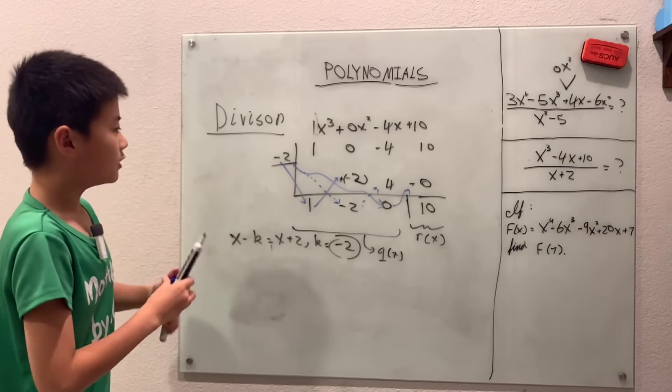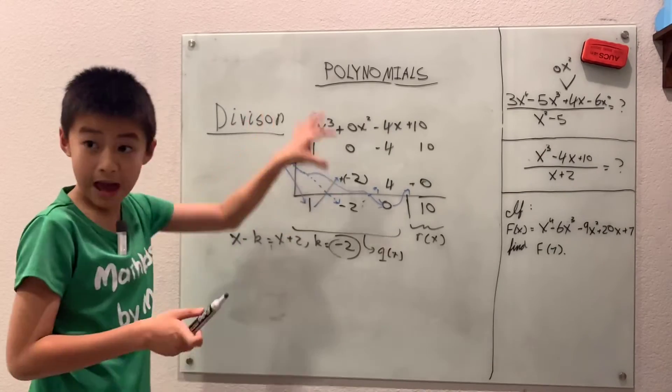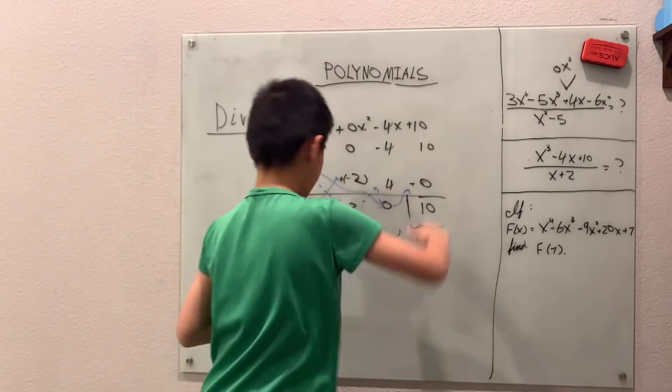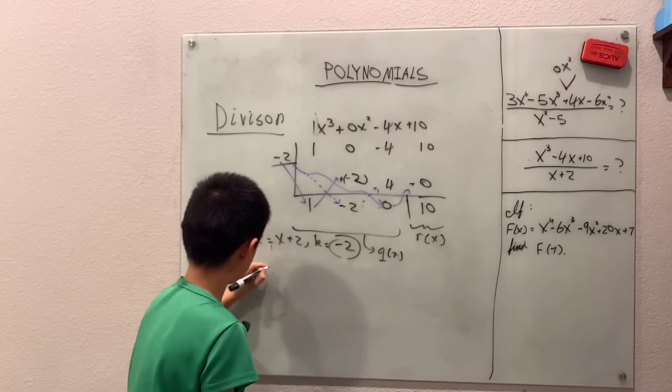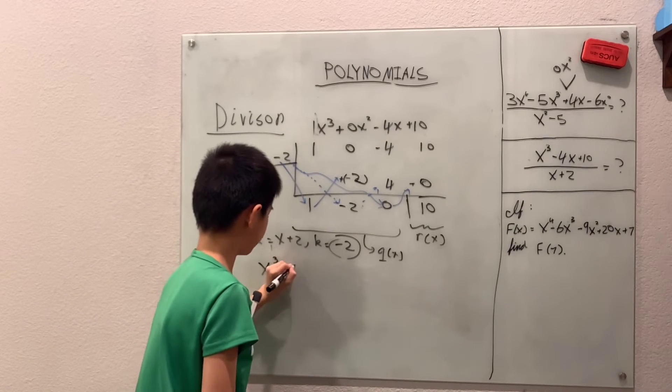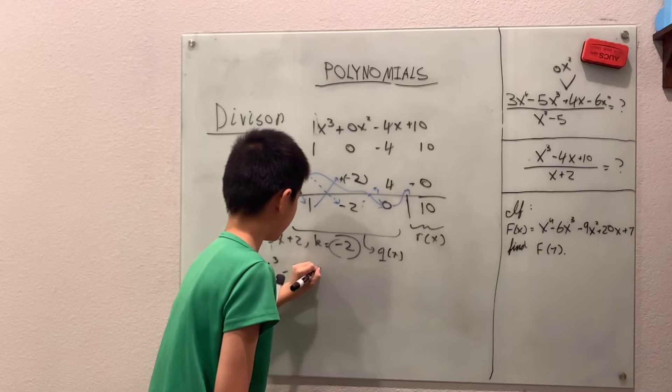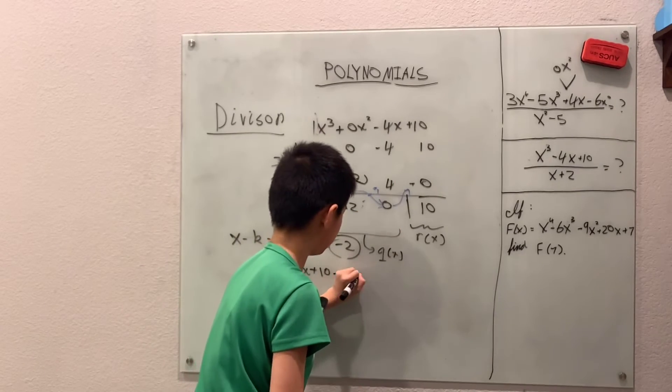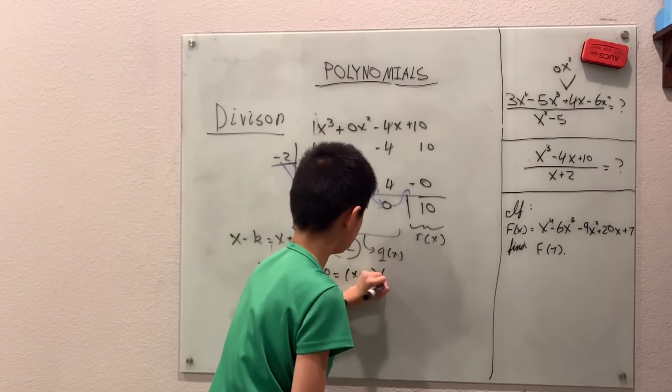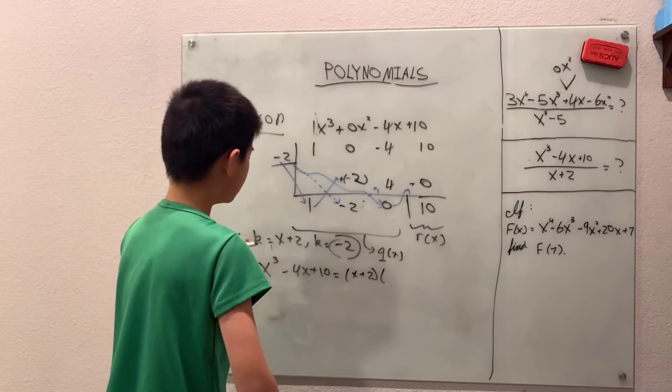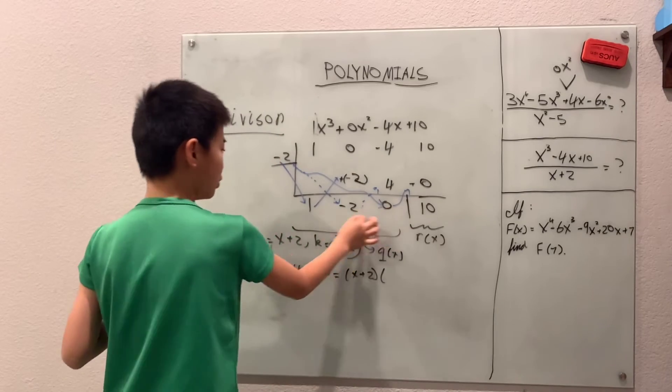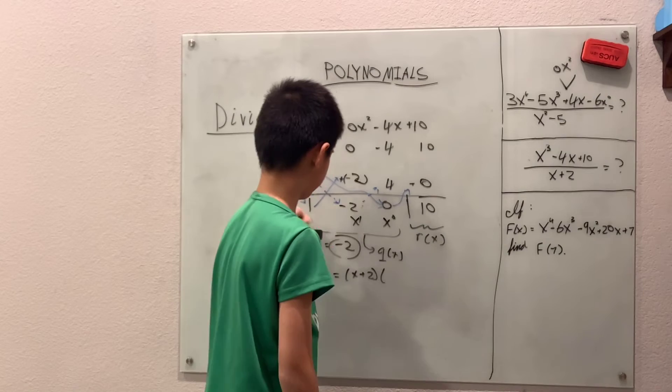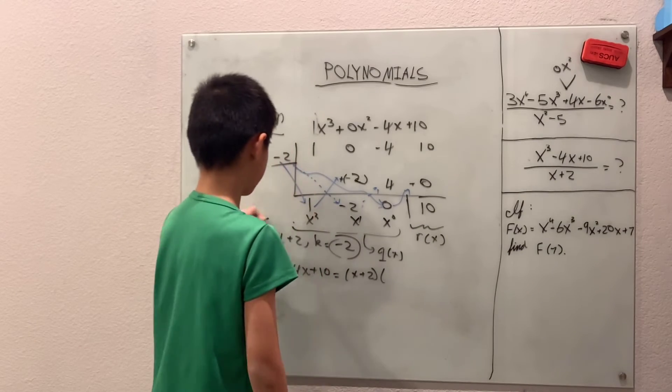So our f(x), which is x cubed minus 4x plus 10, can be rewritten as x plus 2 times q(x). Now this q(x) is like basically working backwards from x to the zero, x to the first, and x squared, and you can keep on going on and on.